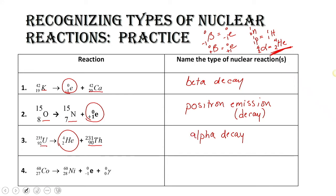Our last one: we have cobalt-60, and we end up with nickel-60. But there are two different particles produced here. Is that possible? Sure it is. Sometimes beta decay or positron emission also occurs with the release of high-energy gamma rays. What type of decay do we have here? We've got that E minus one, which we know is a beta particle. So we've got beta and gamma — beta and gamma decay.